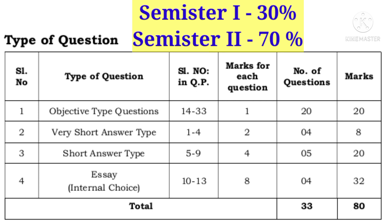Now let us see the question types. Objective type questions are from question number 14 to 33. Each carries 1 mark. There are 20 questions, so 20 into 1 is 20 marks. Very short answer type questions are from question number 1 to 4. Each carries 2 marks. There are 4 questions, so 4 into 2 is 8 marks.